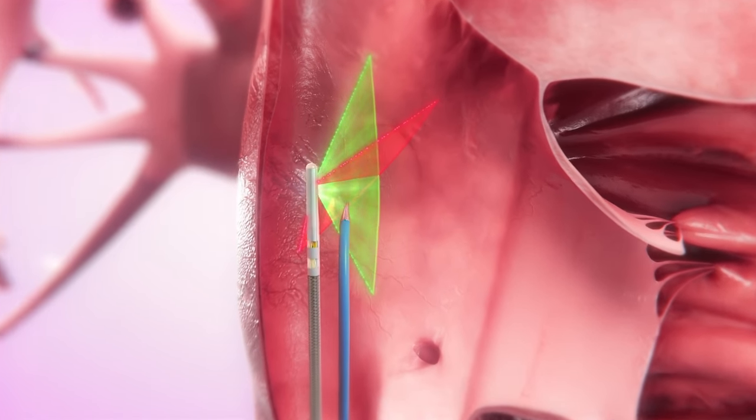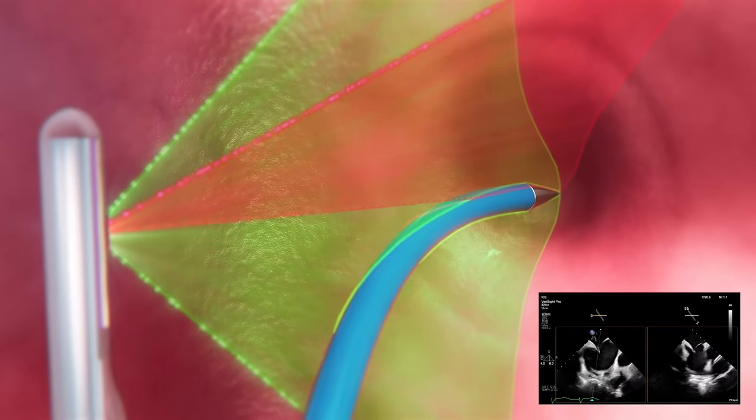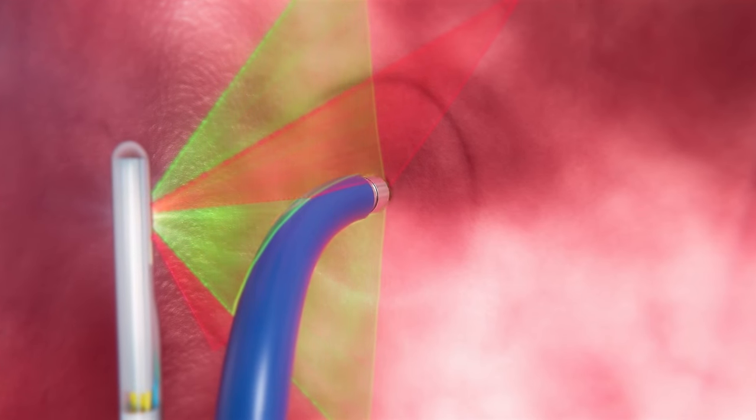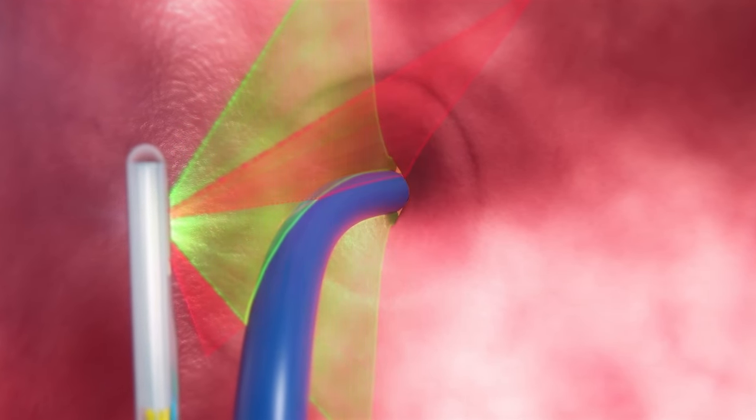Imaging tenting is also possible from this same view, ensuring a safe location and trajectory before puncture. An adequate dilation of the puncture site is recommended before crossing the Verisight Pro catheter through the atrial septum.